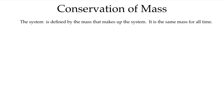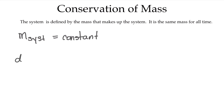Let's talk a little bit more about conservation of mass. First we have to define our system. The system is defined by the mass that makes it up, and conservation of mass says it's the same mass for all time. So we can write that the mass of our system is equal to a constant. We're going to want to be deriving differential equations, so we take the derivative of our system mass with respect to time, and of course the derivative of a constant is equal to zero. There we have our first differential equation: the derivative of our system mass with respect to time is equal to zero.